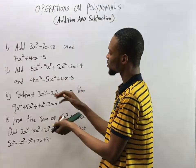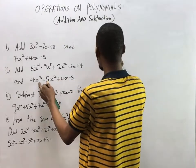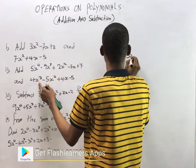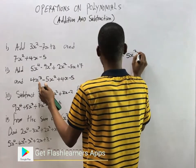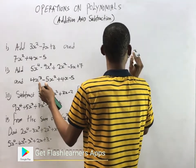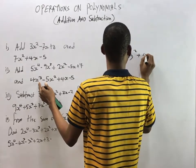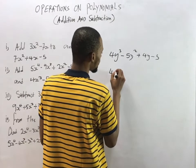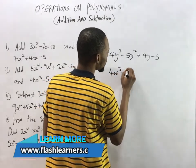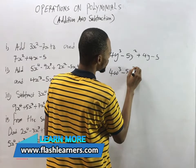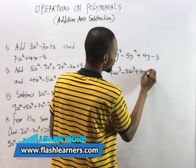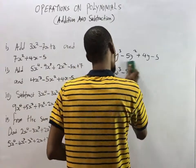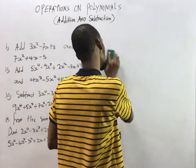You can also use other variables. A polynomial can look like 4y³ - 5y² + 4y - 5, or it can be 4w³ - 5w² + 4w - 5. These are variables with ascending or descending power — that's a polynomial.